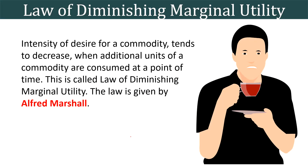Moving on to the Law of Diminishing Marginal Utility. The intensity of desire for a commodity tends to decrease when additional units of the commodity are consumed at a point of time. This law is given by Alfred Marshall. As per this law, the marginal utility of a good diminishes as an individual consumes more and more units of the good. In short, as a consumer takes more units of a good, the extra utility or satisfaction derived from each extra unit goes on falling.